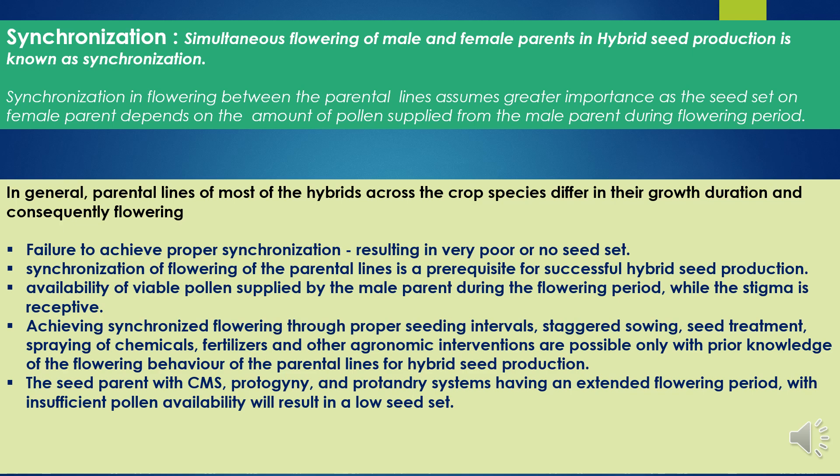Achieving synchronized flowering through proper seeding intervals, staggered sowing, seed treatment, spraying of chemicals, nick management, fertilizers, and other agronomic interventions is possible only with prior knowledge of the flowering behavior of the parental lines. For seed parents with cytoplasmic male sterility, protogyny, or proto-andry systems having extended flowering periods with insufficient pollen availability, staggered sowing of the pollen parent may be followed to supply pollen over a longer period matching stigma receptivity of the female, resulting in desired yield.